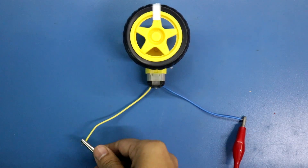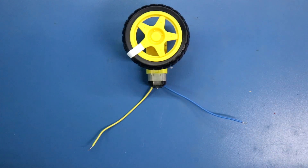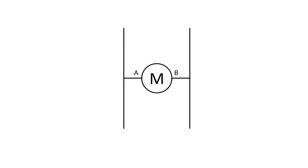Now it is rotating clockwise. So in the H-bridge circuit we are going to do this. This is the H. What we will do is connect a motor here — one pin of the motor to this side and another pin to this side. This is pin A and pin B. Now we will connect both pins.